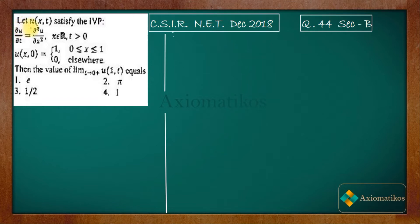Let u(x,t) satisfy the IVP. We have this PDE given to us along with the initial condition. What we have to find out is the value of the limit as t goes to 0 plus of u(1,t).